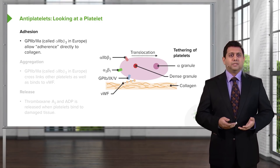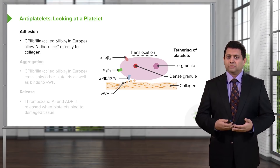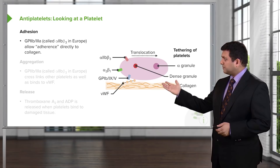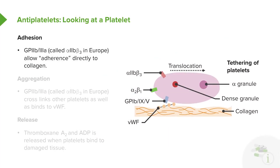The glycoprotein 2B3A molecule is central to the function of a platelet. You can see here I have a picture of a platelet next to me, and you can see in blue the glycoprotein 2B3A molecule — also called the alpha 2B beta 3 molecule in Europe — which allows that platelet to adhere to the collagen substrate of any particular tissue.